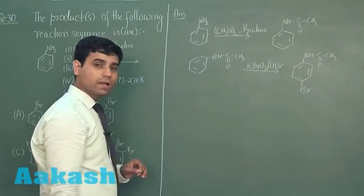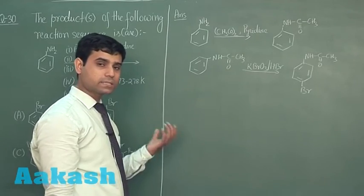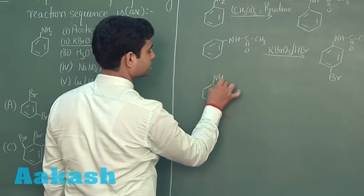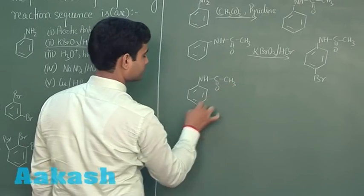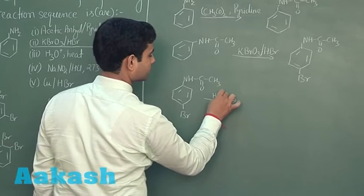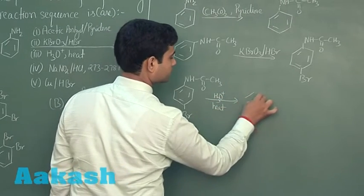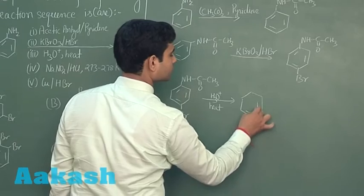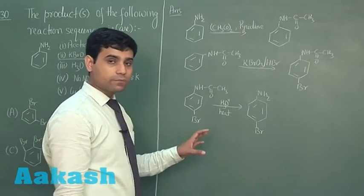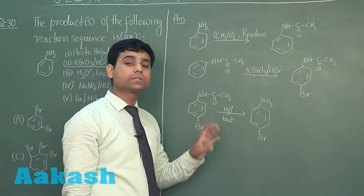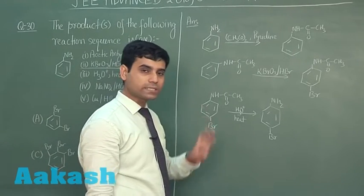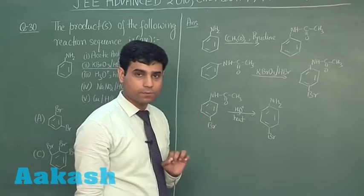After that, we have hydrolysis, H3O+. Hydrolysis will give us NH2 again and para-bromoaniline. On reaction with NaNO2 and HCl at 0 to 5 degree Celsius or 273 to 278 Kelvin, diazotization takes place and benzene diazonium chloride will be formed.